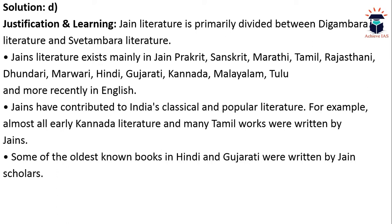Jain literature exists mainly in Jain Prakrit, Sanskrit, Marathi, Tamil, Rajasthani, Dhandari, Marwadi, Hindi, Gujarati, Kannada, Malayalam, Tulu, and more recently in English. Jains have contributed to India's classical and popular literature — for example, almost all early Kannada literature and many Tamil works were written by Jains. Some of the oldest known books in Gujarati were also written by Jain scholars.